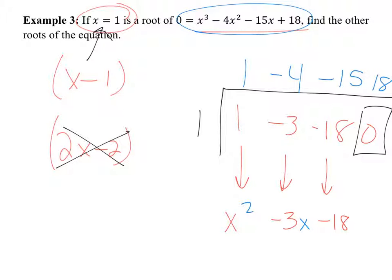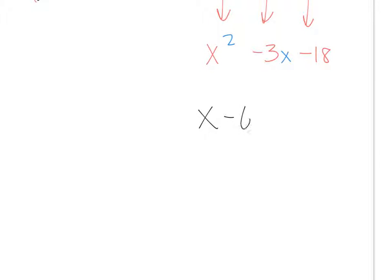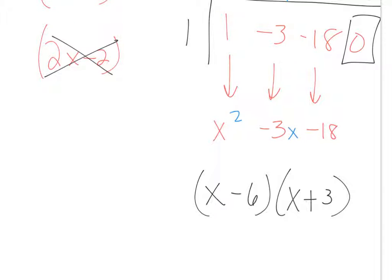Can x squared minus 3x minus 18 be factored? Yes — it factors as (x minus 6)(x plus 3). What was the original factor? x minus 1. So all three factors are x minus 1, x minus 6, and x plus 3. At most three factors for a cubic, and we have three real factors. If the quadratic couldn't be factored, use the quadratic formula. If you can't factor it, the roots are likely imaginary or irrational.